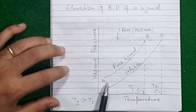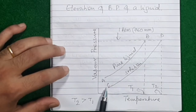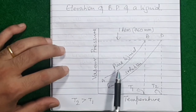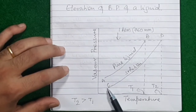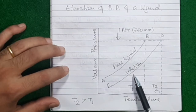At the same temperature, a solution always exhibits lower vapor pressure — that phenomenon is called lowering of vapor pressure. So the vapor pressure-temperature curve of the solution will always be lower than the vapor pressure-temperature curve of the pure liquid. This is the vapor pressure-temperature curve of the solution of the same liquid.